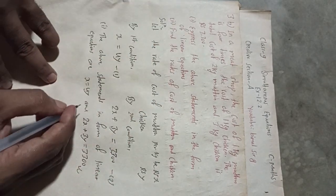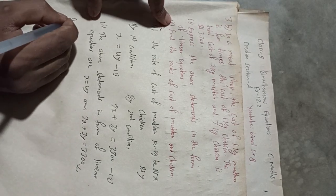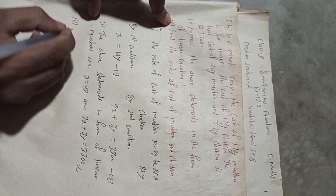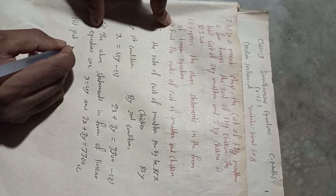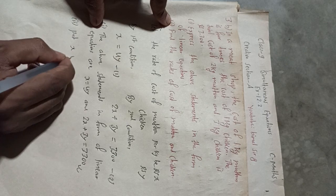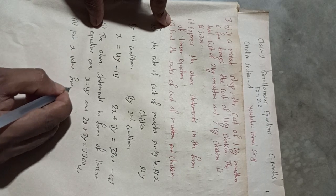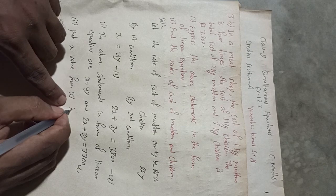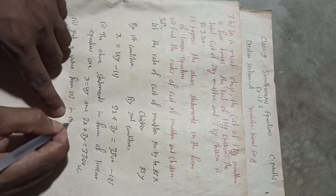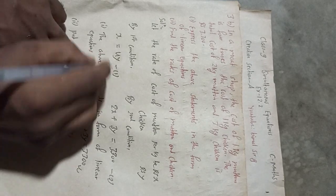Therefore, the above statements in the form of linear equations are: x = 4y and 2x + 3y = 3300. This is the required solution for part one.